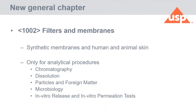During the discussions on the revision for 1724, we came up with the idea of creating a new chapter. The number is 1002 and the title is provisional. We are initially proposing 'Filters and Membranes.' We would like to provide a starting point when you are selecting a synthetic membrane for IVRT and when you are selecting human or animal skin for an IVPT. We would like to discuss how to qualify and what kind of information you need to gather. This chapter will also be applicable to other analytical procedures like chromatography, dissolution, particle and foreign matter, microbiology, and so on.